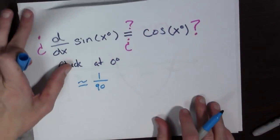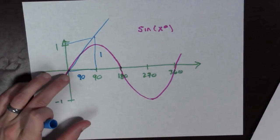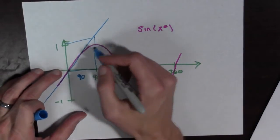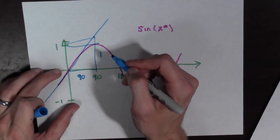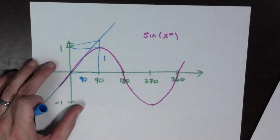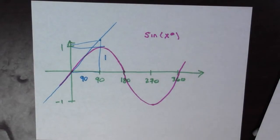And so the slope of the tangent line of x degrees, that's about one over 90. It's a little bit higher, so in fact it's a little bit bigger, but not that much bigger. It's just a little bit bigger. It's about one over 90.